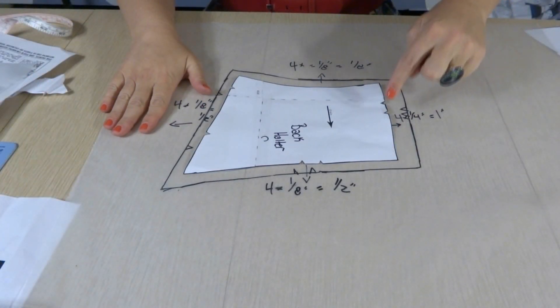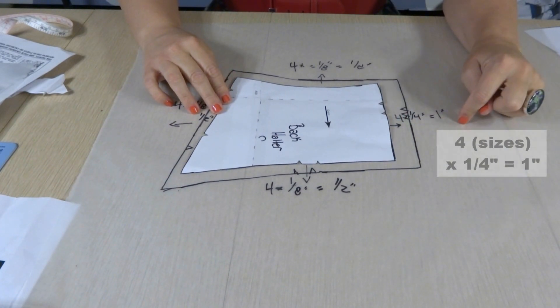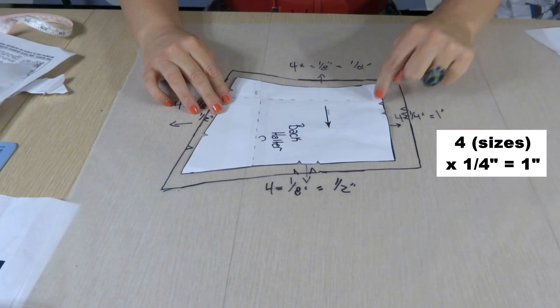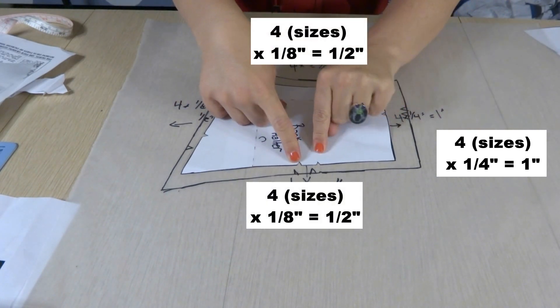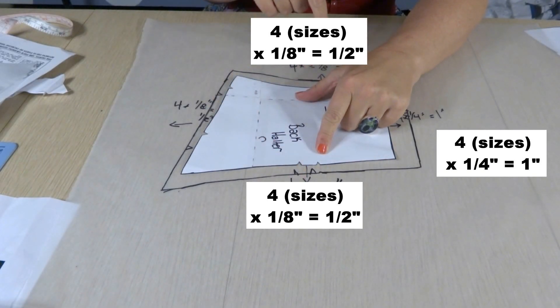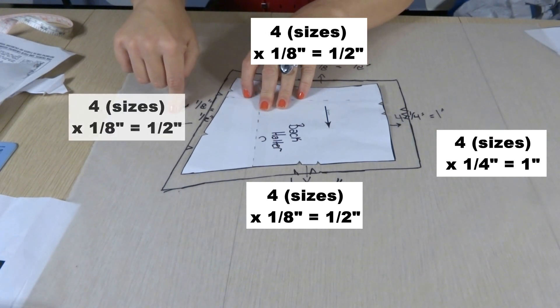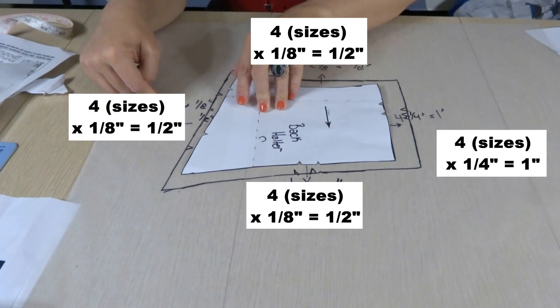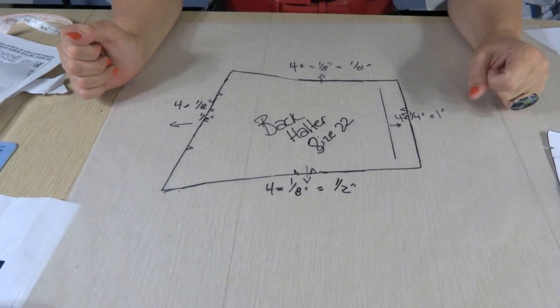With the back halter piece, you're going to move that center side over a quarter of an inch for every size. So we're moving out over an inch. Here on the top and the bottom, you're going to move it by an eighth of an inch for every size. So we're doing a half an inch, a half an inch. And on this side, we're doing an eighth of an inch as well. So moving it a half of an inch. You will end up with a piece that looks like this.